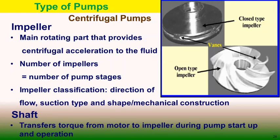Impellers are classified based on direction of flow from the rotational axis, suction type (single or double suction), and mechanical construction. Closed impellers are enclosed by shrouds, while open and semi-open impellers are used in vortex pump arrangements. Depending on the configuration we have different types — either open or closed type impeller.